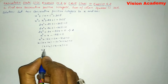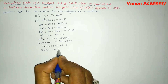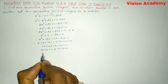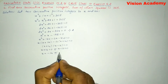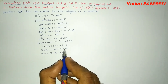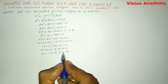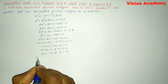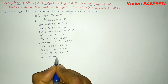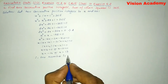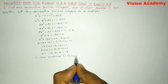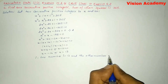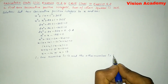So x + 14 = 0 or x - 13 = 0, which gives x = -14 or x = 13. We do not consider -14 since we need positive integers. Therefore, one number is x = 13 and the other number is x + 1 = 14.